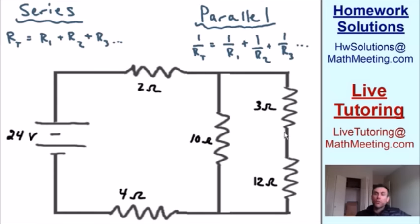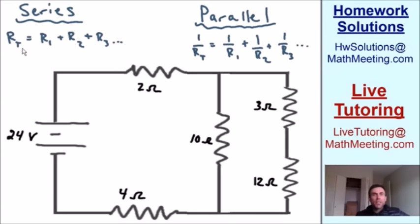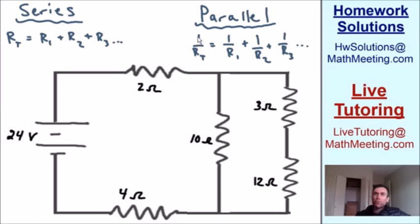If two or more resistors are in series, we use the formula on the left: the total resistance equals R1 plus R2 plus R3 — we just add them together. But if two or more resistors are in parallel, we use the formula on the right: 1 over the total resistance equals 1/R1 plus 1/R2 plus 1/R3, and so on.